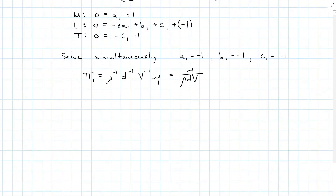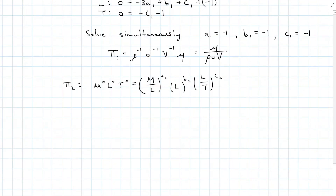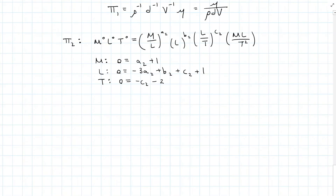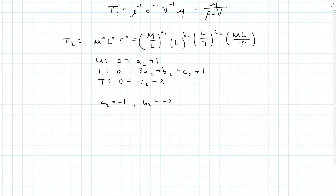Rinse and repeat for the second pi equation. We still have density, diameter, and velocity, but this time the remaining variable is the drag force, which has dimensions M·L·T⁻². Again setting exponents equal and solving simultaneous equations, we find a2 = −1, b2 = −2, and c2 = −2, meaning pi two equals F_D divided by rho·d²·v².